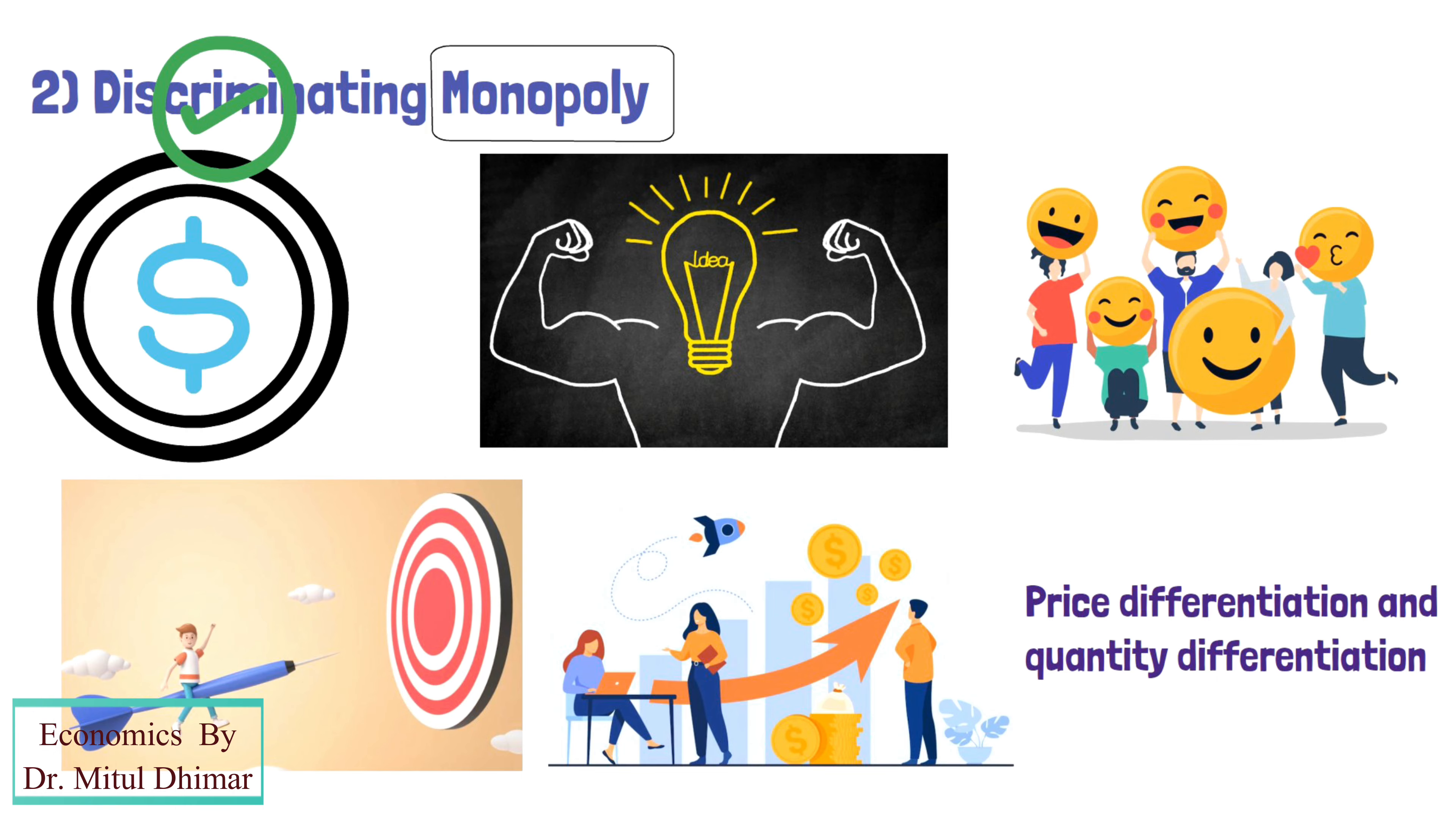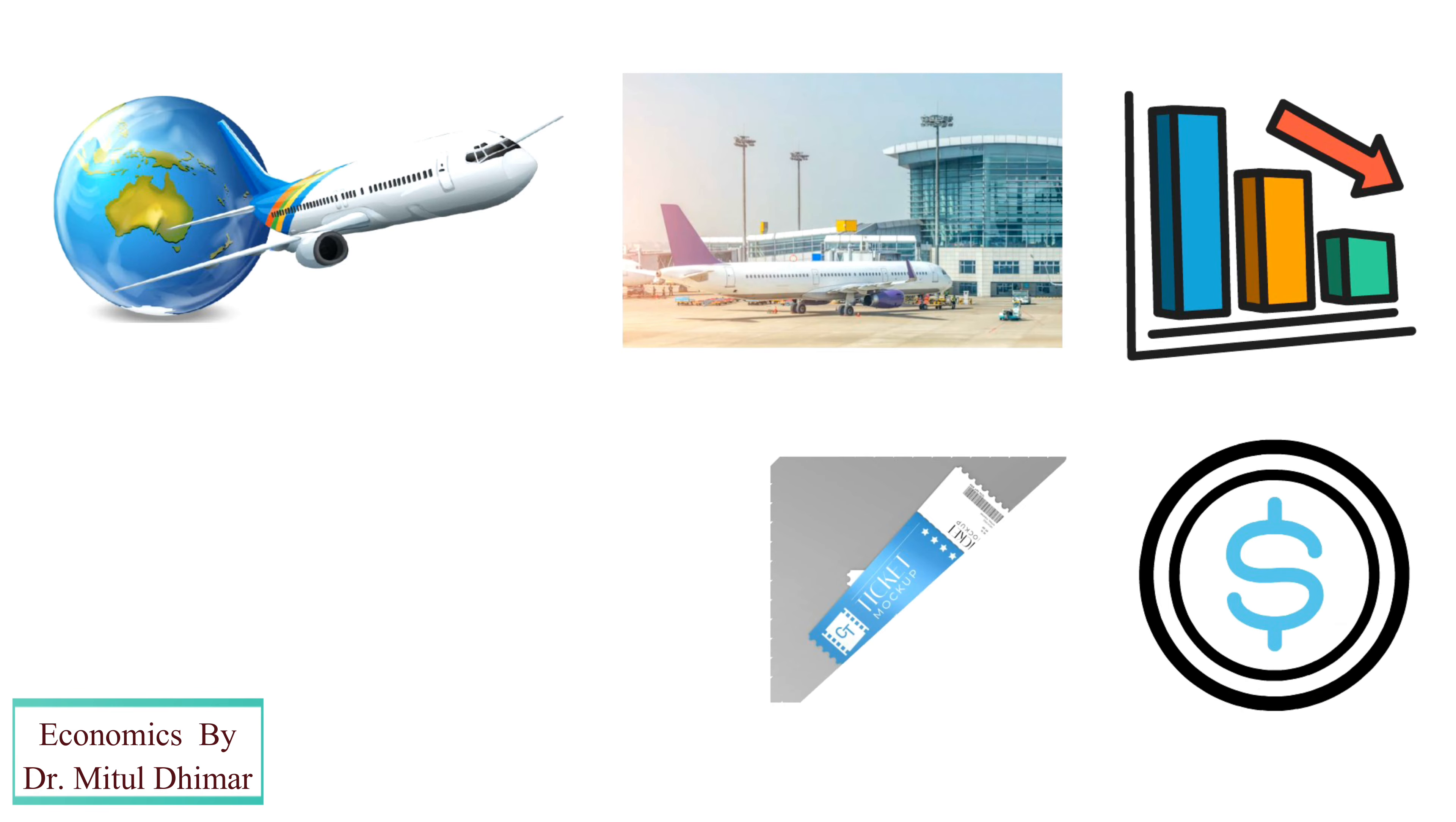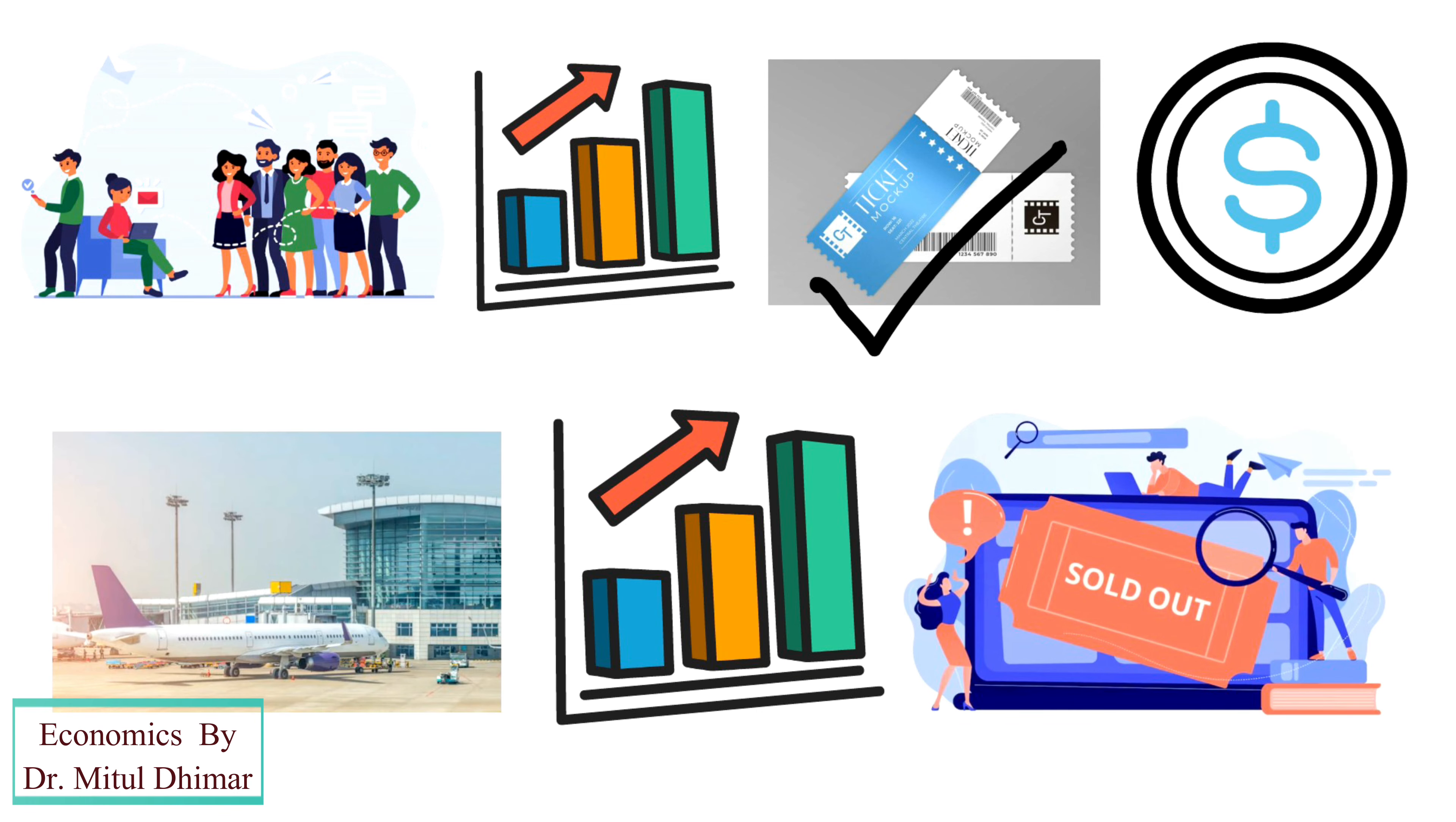Therefore, a discriminatory monopoly, as the name suggests, discriminates its buyers in different markets with different prices. For example, when a new flight is scheduled, airlines tend to lower the price of tickets to raise demand. After enough tickets are sold, ticket prices increase and the airline tries to fill the remainder of the flight at the higher price.